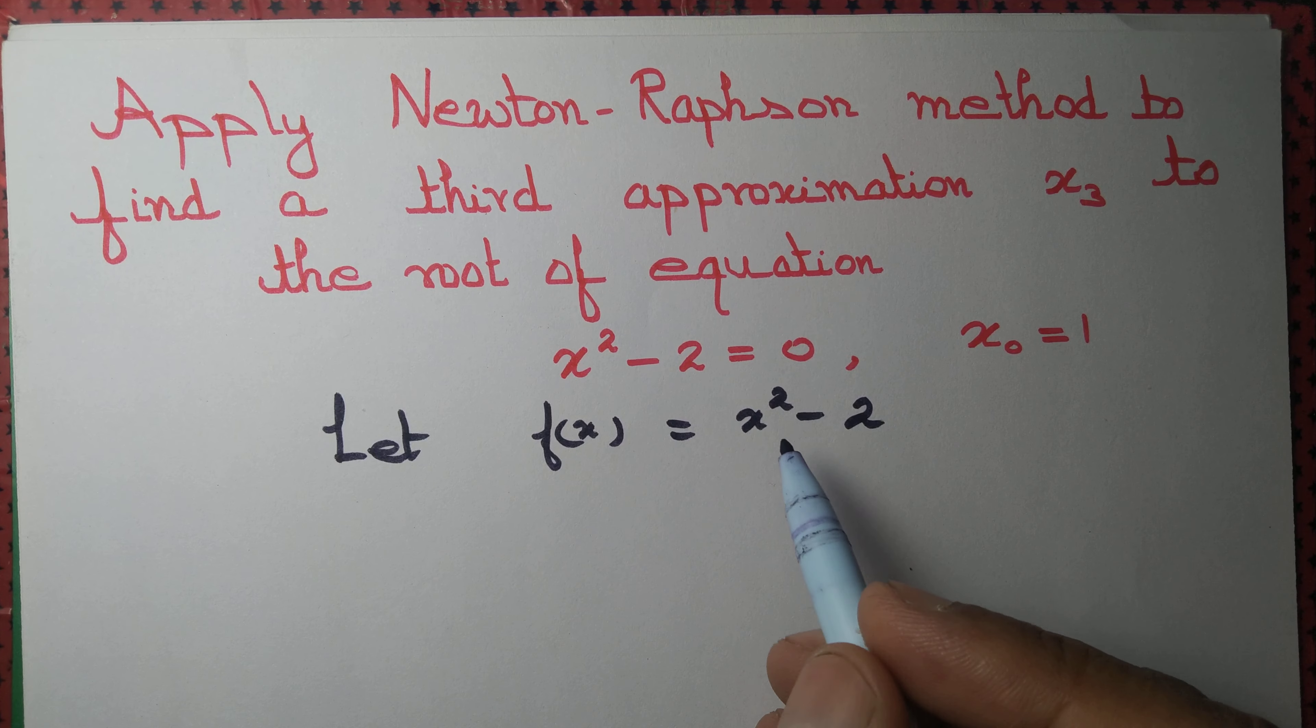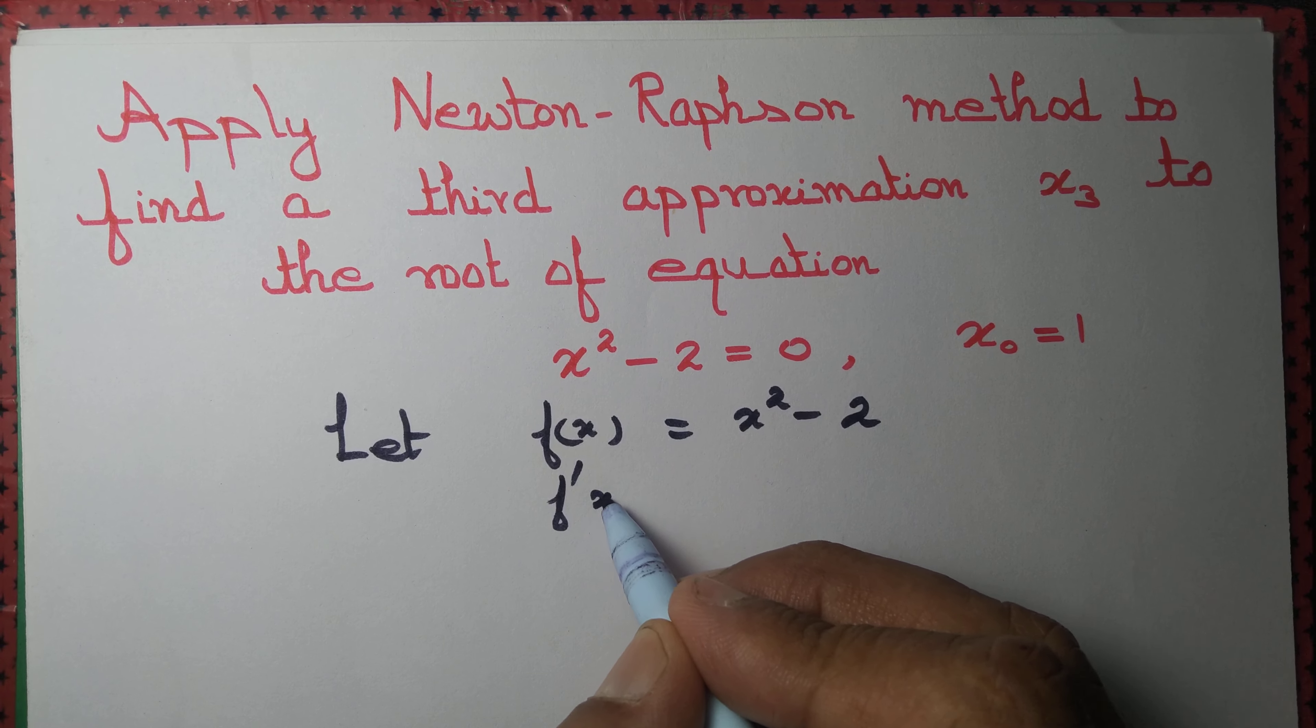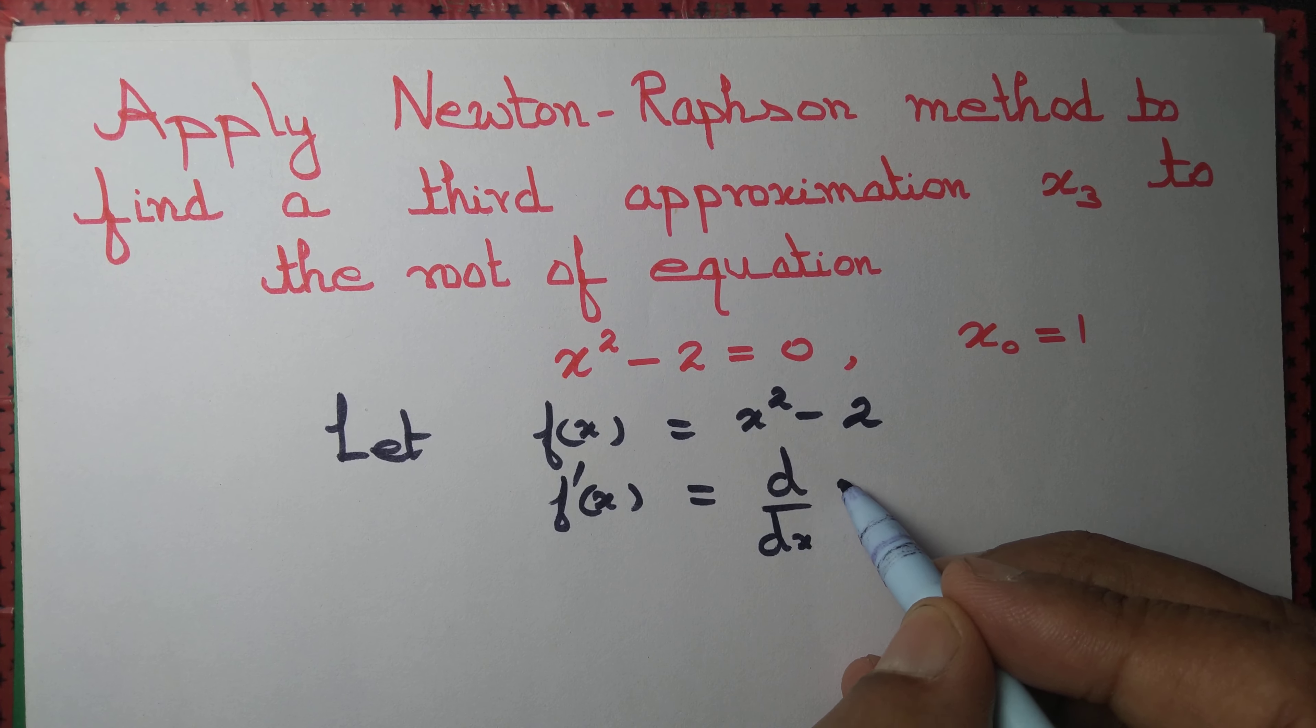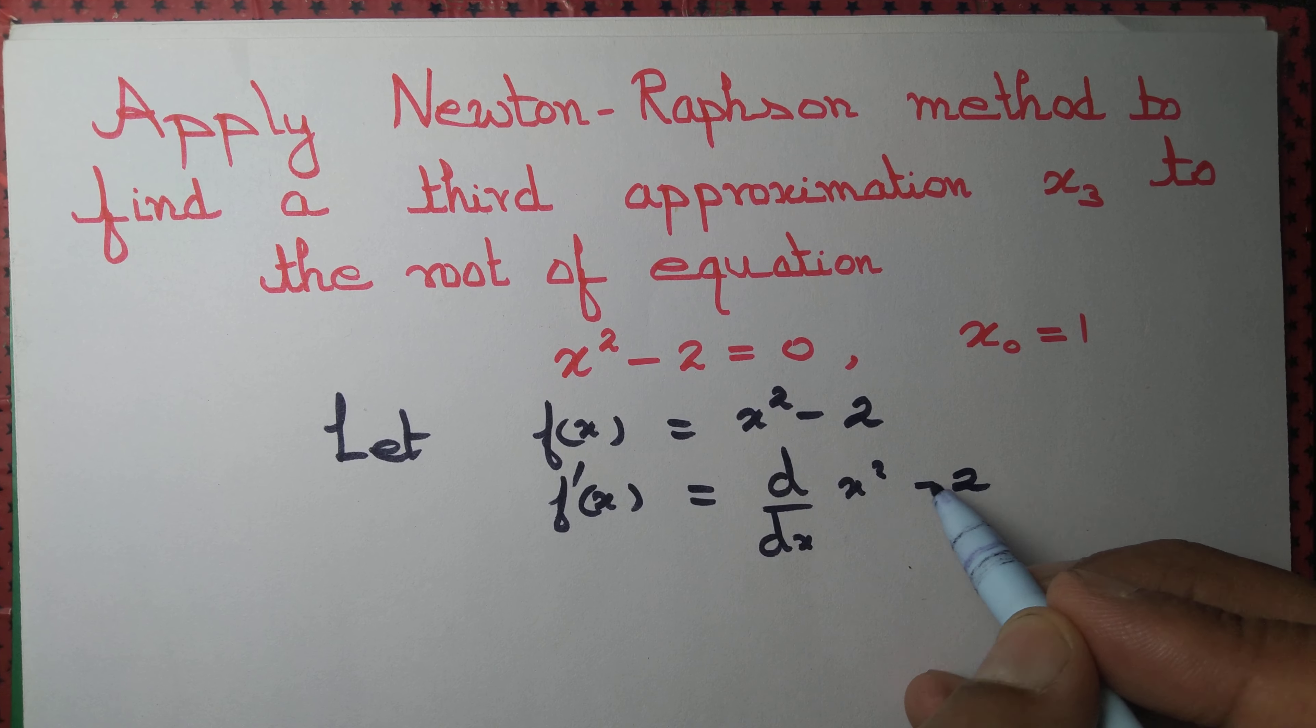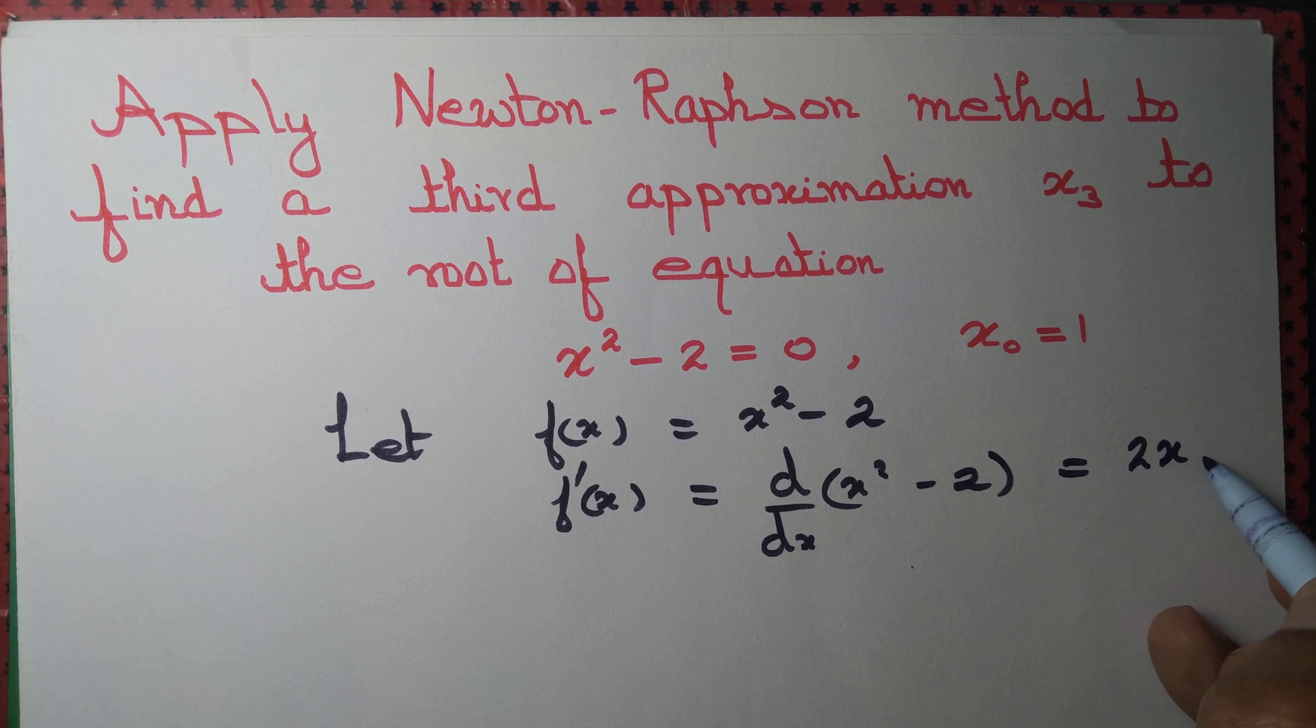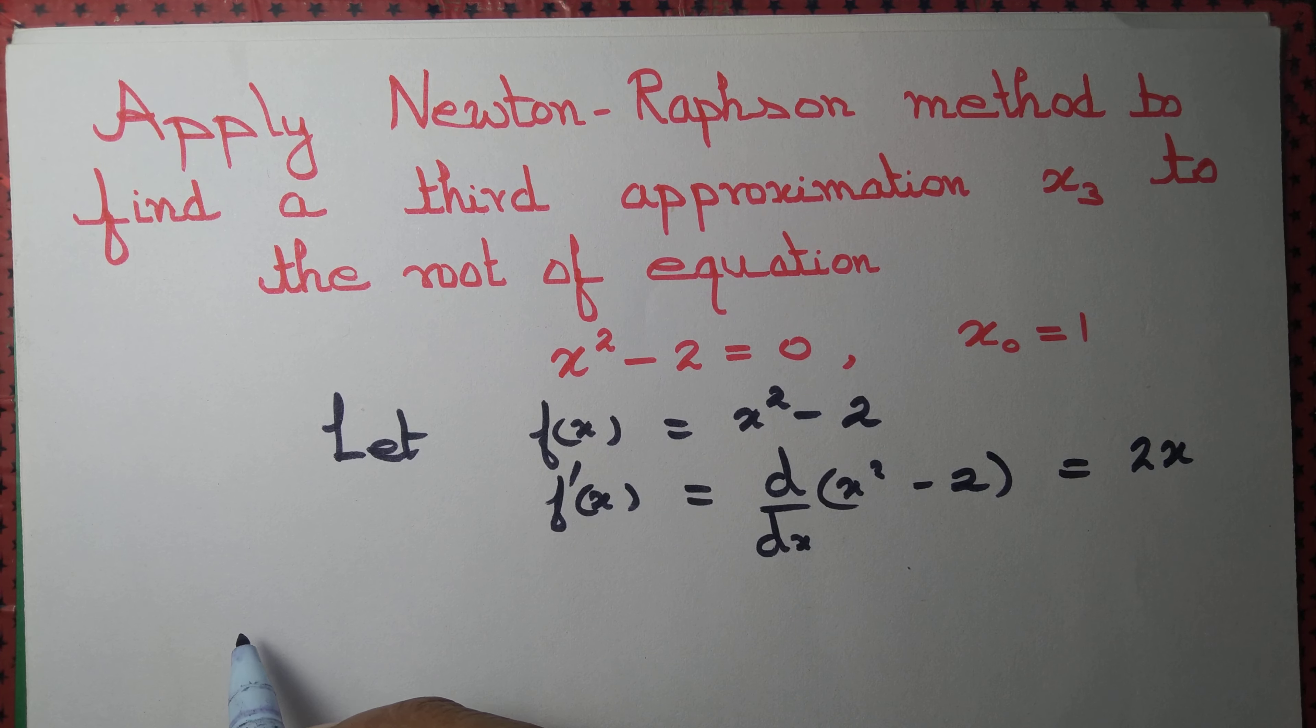We are given f(x) = x² - 2. Then f'(x), the derivative of f(x), equals d/dx of (x² - 2). The derivative of x² is 2x and the derivative of 2 is 0, so f'(x) = 2x. Therefore, by Newton-Raphson method,